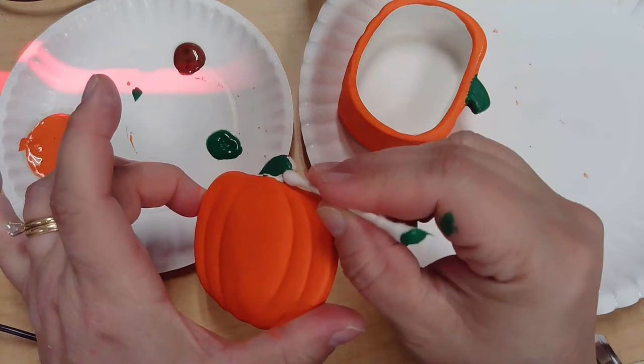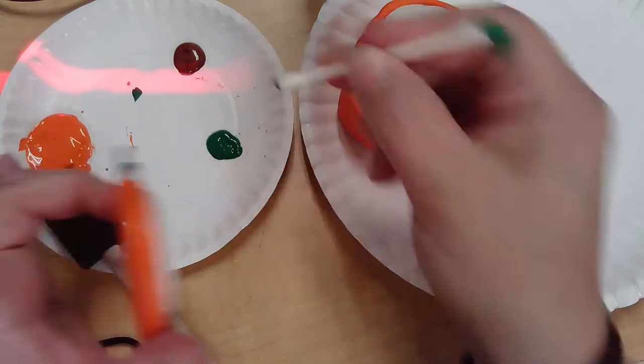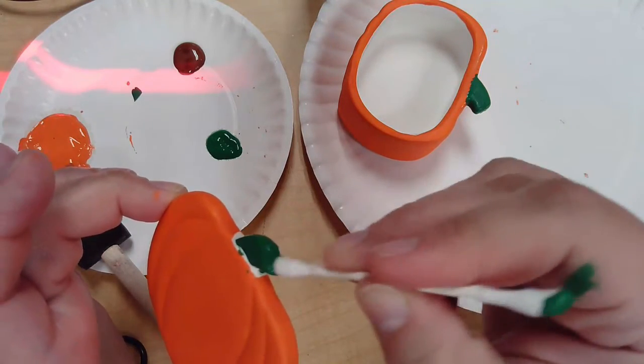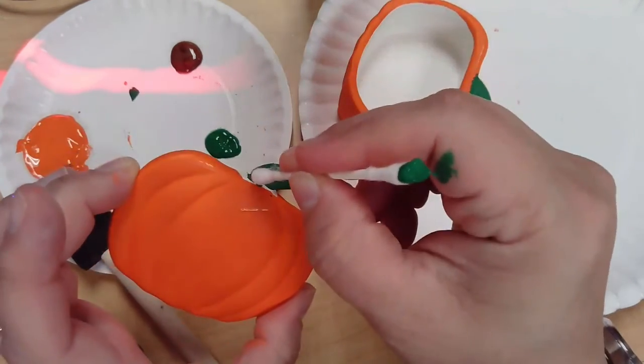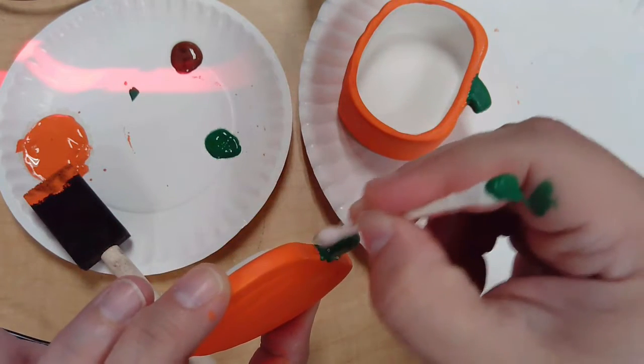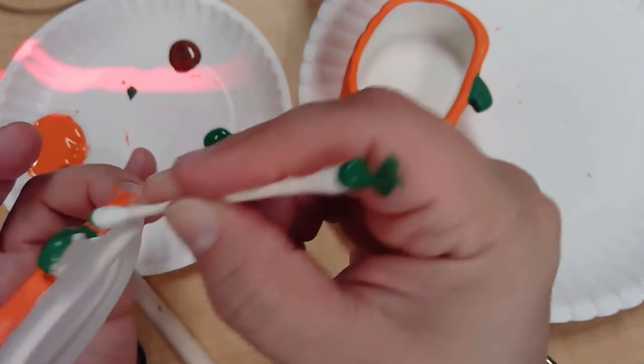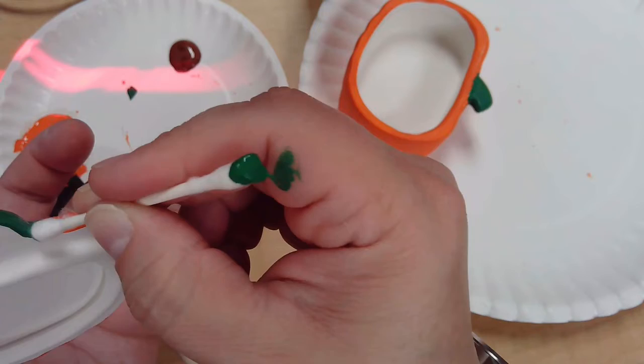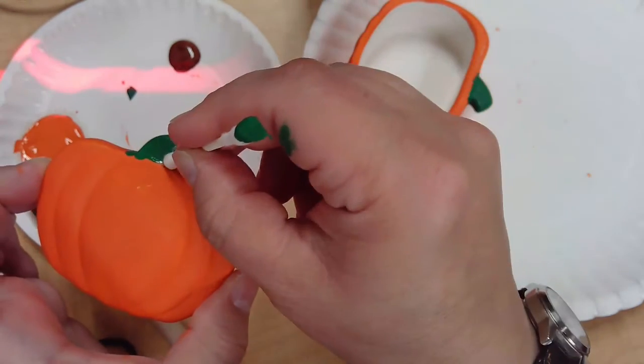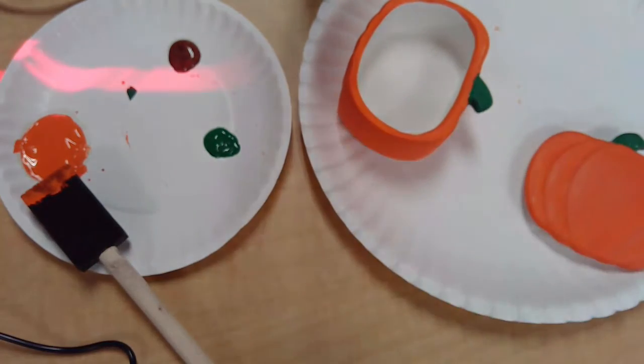If your q-tip end starts to get frayed, then you can switch to the other side. You shouldn't need more than two for this. One for each color. Almost done with the green here. Got a little bit in there. All right.